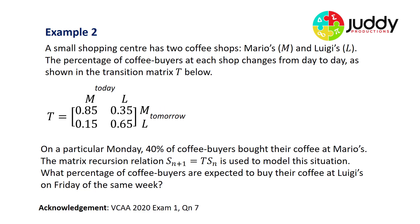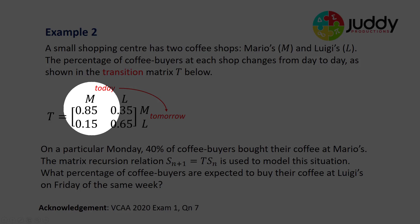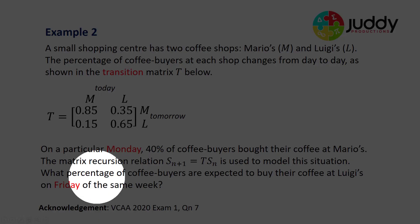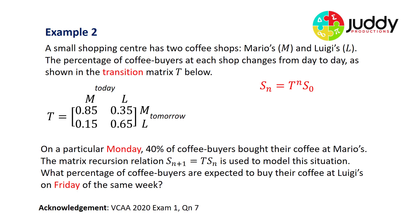On a particular Monday, 40% of coffee buyers bought their coffee at Mario's. The matrix recursion relation, which is shown here, is used to model this situation. Our question is: what percentage of coffee buyers are expected to buy their coffee at Luigi's on Friday of the same week? This is the transition matrix that talks about the transition from today's coffee purchase to tomorrow's coffee purchase. However, this question isn't just about today and tomorrow. This is about starting at Monday and finding an answer in Friday, so this is forecasting forward.